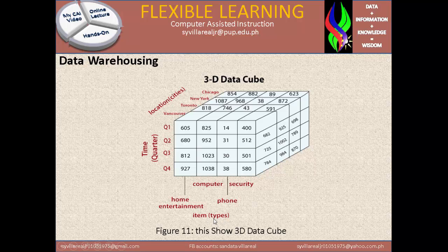If we are going to interpret the topic in terms of the metadata in the word dimension, it categorizes as item home entertainment, item computer, item phone, and item security, because this is what we call the type of item.